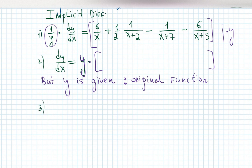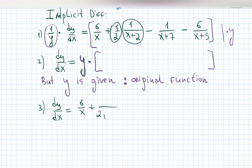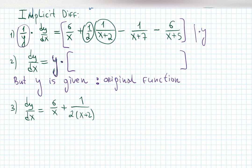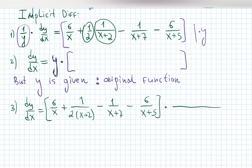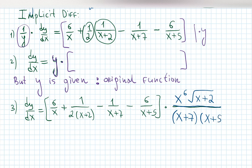The final answer: dy/dx equals 6 over x, plus one-half times 1 over (x+2) which can be merged as 1 over 2(x+2), minus 1 over (x+7), minus 6 over (x+5), all times the original function — x to the sixth times the square root of (x+2), all over (x+7) times (x+5) to the sixth. This is the final answer.